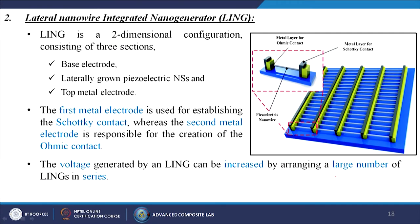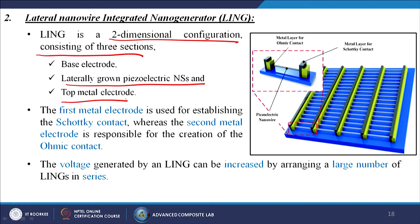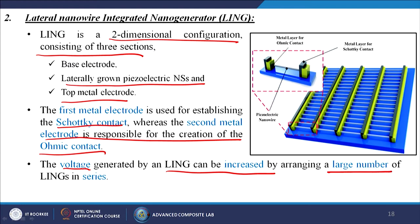LING (lateral nanowire integrated nanogenerator) is a two-dimensional configuration consisting of three sections: base electrode, laterally grown piezoelectric nanostructures, and top metal electrode. The first metal electrode establishes the Schottky contact while the second is responsible for the ohmic contact. The voltage generated by a LING can be increased by arranging a large number of LINGs in series.